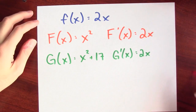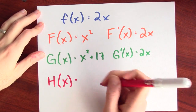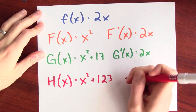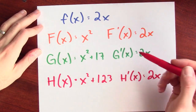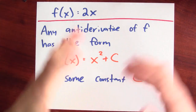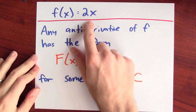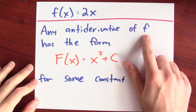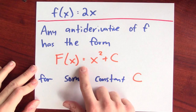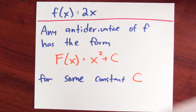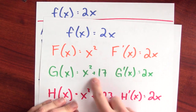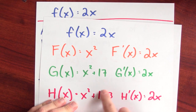Now let's think of yet another function whose derivative is 2x — I can play this game all day. H(x) = x² + 123. Big H differentiates to 2x again, so big H is another antiderivative of little f. There's clearly a pattern here. Any antiderivative of little f has the form x² + c for some constant c. Our previous examples had this form: constant 0, constant 17, constant 123.